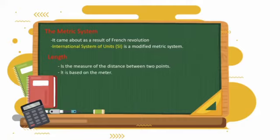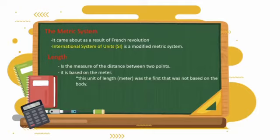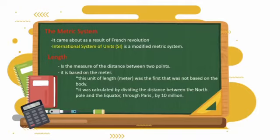Length is the measure of the distance between two points. It is based on the meter. This unit of length, which is the meter, was the first that was not based on the body. It was calculated by dividing the distance between the North Pole and the equator through Paris by 10 million. Meter sticks and metric rulers are common instruments for measuring length.